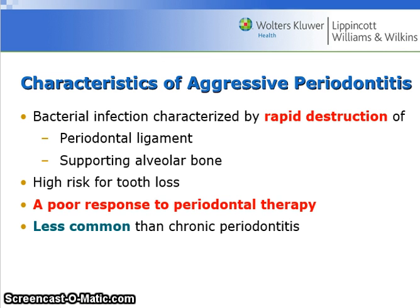The characteristics of aggressive periodontitis include a bacterial infection characterized by rapid destruction of the periodontal ligament and the supporting alveolar bone. It is a high risk for tooth loss and there is commonly a poor response to periodontal therapy. Aggressive periodontitis is less common than chronic periodontitis.